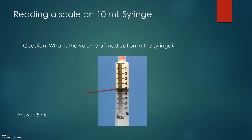Reading a scale on a 10 milliliter syringe — Question: What is the volume of medication in this syringe? One example shows exactly 5 milliliters, which is straightforward. For another example, the volume is between 3 and 4, so we know it will be 3-point-something. Since each unit represents 0.2 milliliters, we count 3 increments times 0.2, giving us 3.6 milliliters. Keep in mind this is not 3.3 milliliters — that reading would be incorrect.